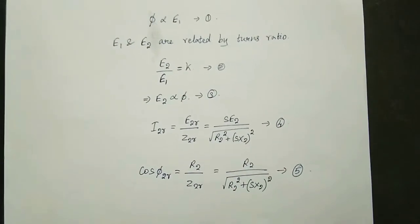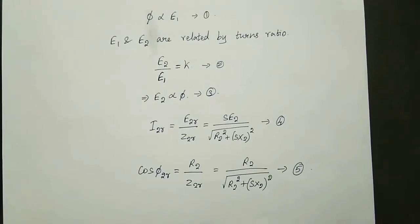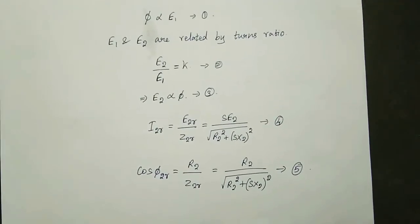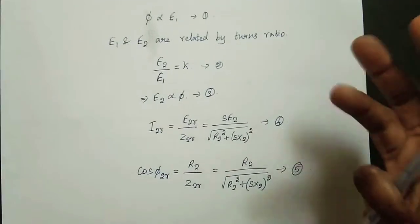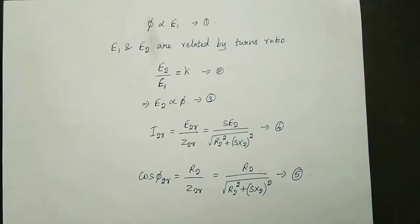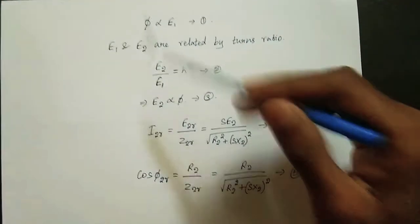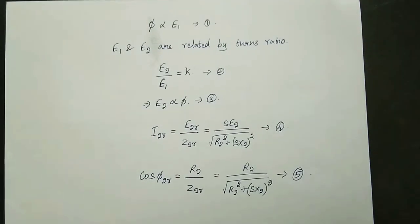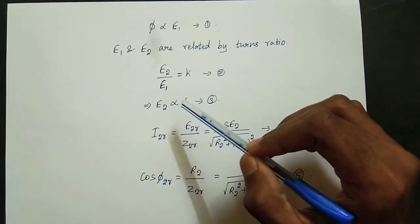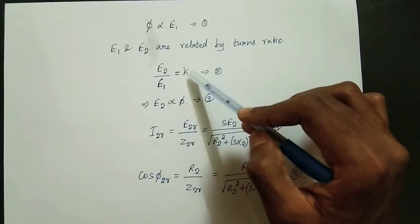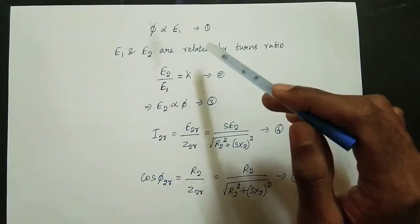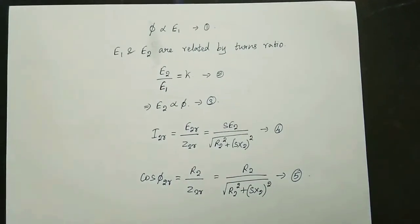The flux depends on the stator voltage. E1 is the stator voltage. The voltage depends on frequency. The flux is induced by the voltage, and the voltage is linked with the stator voltage. E2 is directly proportional to flux (φ), and E1 is directly proportional to φ. So e2 equals k into φ, and if k is proportional then e2 equals φ. Thus φ is directly proportional to E1 and e2 is directly proportional to φ.